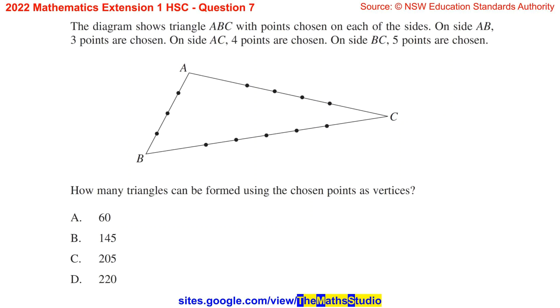Question 7. The diagram shows triangle ABC with points chosen on each of the sides. On side AB, three points are chosen. On side AC, four points are chosen. On side BC, five points are chosen. How many triangles can be formed using the chosen points as vertices?